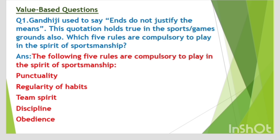Next is the value-based question. Gandhiji used to say the ends do not justify the means — this quotation holds true on the sports and games grounds also. Which five rules are compulsory to play in the spirit of sportsmanship? Answer: punctuality, regularity of habits, team spirit, discipline, and obedience.